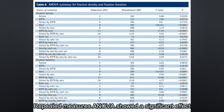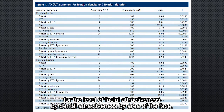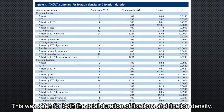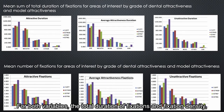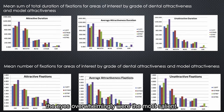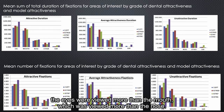Repeated measures ANOVA showed a significant effect for the level of facial attractiveness by dental attractiveness by area of the face. This was seen for both the total duration of fixations and fixation density. For both variables, the eyes overwhelmingly were the most salient. Whether for total duration or fixation density, the eyes were viewed more than the mouth, which was viewed more than the nose.